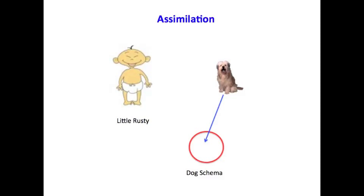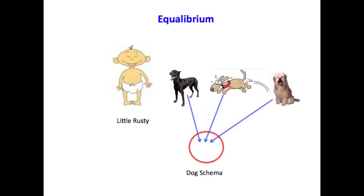Little Rusty sees another dog, and since he already has a dog schema, there's no need for him to do an accommodation and build a new folder. He is able simply to practice assimilation. The new dog that he sees neatly fits into his dog schema folder, so he's easily able to assimilate that experience. He meets another dog, and no longer does he need to build a new dog schema — he already has one. He can assimilate this information and just fold it neatly into the folder. With all three dogs, he now has equilibrium. When he sees those dogs, he knows what they are. They have a dog schema — that's where they belong.